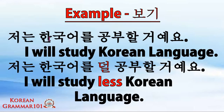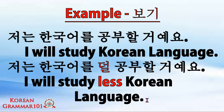Example with a verb. We use the same example as before: jeonun hangogurul kumbuhal goyeo — I will study Korean language. By putting the word 덜 (dol) before your verb, it becomes jeonun hangogurul dol kumbuhal goyeo — I will study less Korean language. Maybe he studied quite hard before, but this time he decided to make it less.